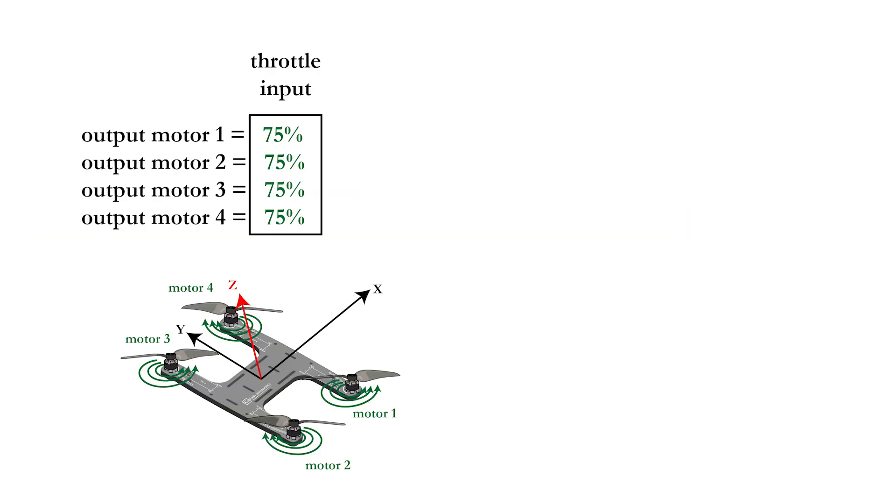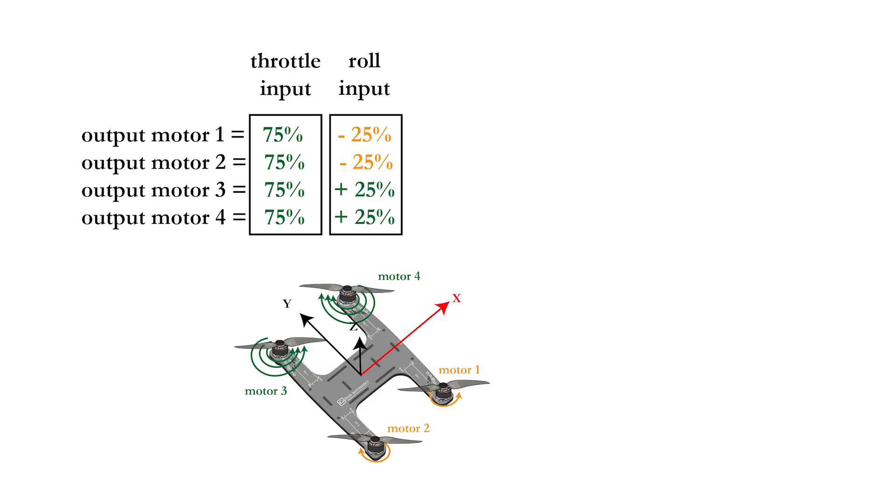A nice property of this definition for the throttle, roll, pitch, and yaw input is that you can write all movements as a linear combination of each other for all motor outputs. The output of the motors first consists of the throttle input, which is the same for all motors and used to reach a certain altitude. Next, you add or subtract some motor power when you want to perform a roll movement.